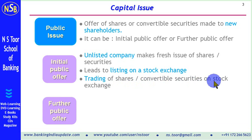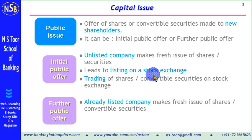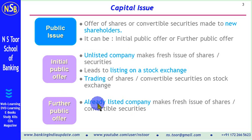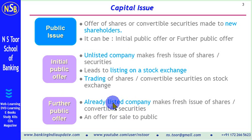On the other hand, a further public offer is made by a listed company — a company that is already listed. In a further public offer, they make a fresh issue of shares or convertible securities. So while an IPO is made by an unlisted company, an FPO is made by an already listed company. In this case, the promoter can also offer sale of shares to the public.